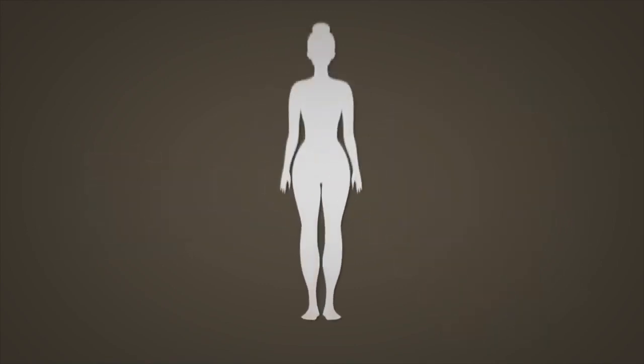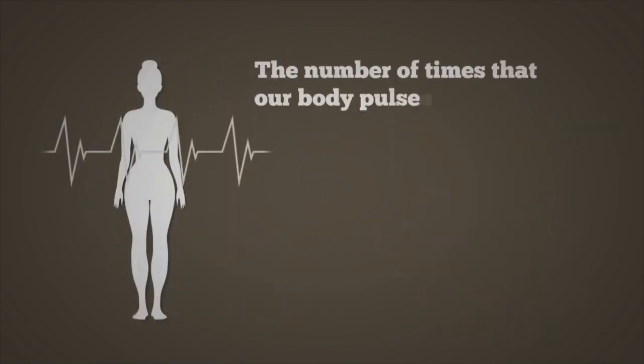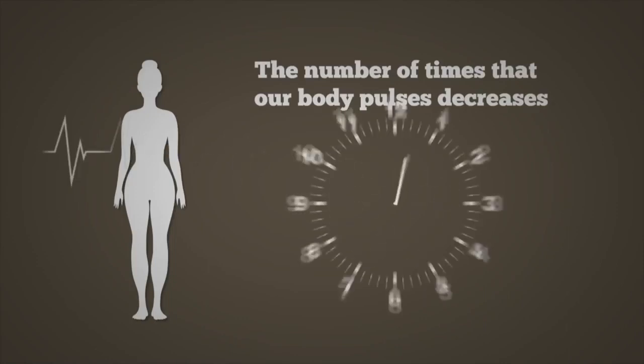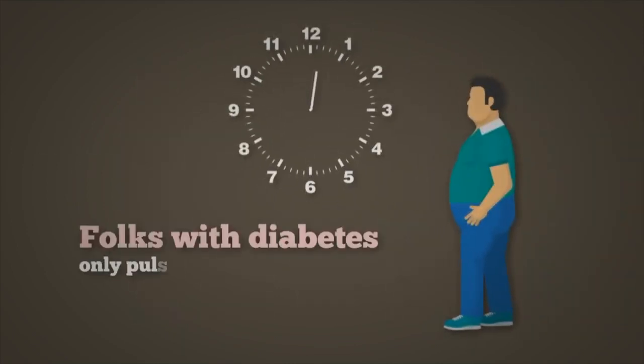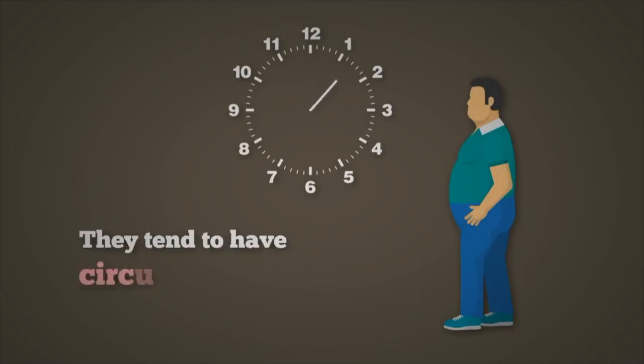As we get older, the number of times that our body pulses decreases. Instead of pulsing three to five times per minute, it pulses about once a minute. Folks with diabetes only pulse about once every 10 minutes, and this is why they tend to have circulatory problems.